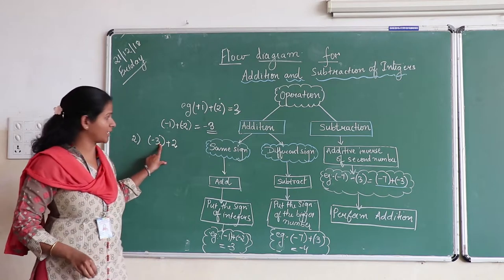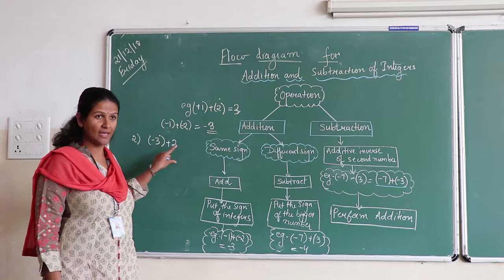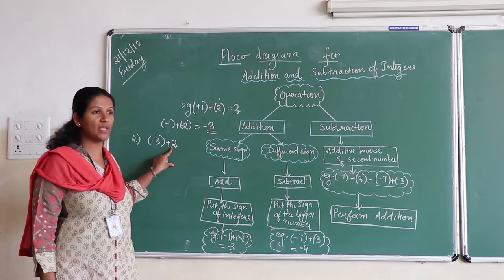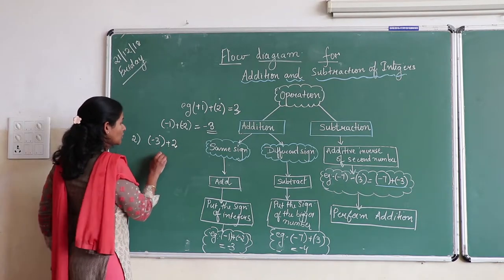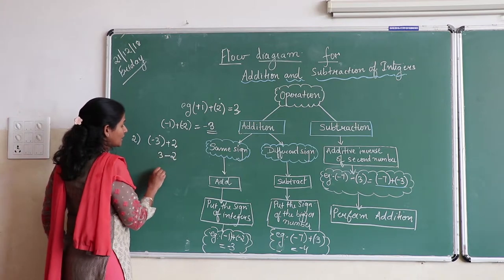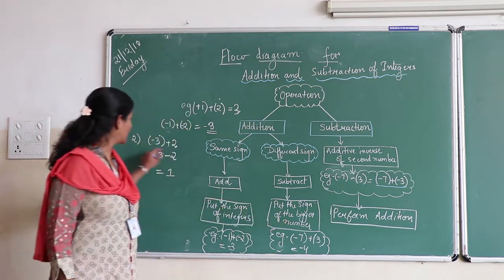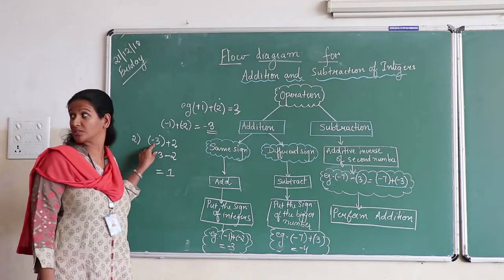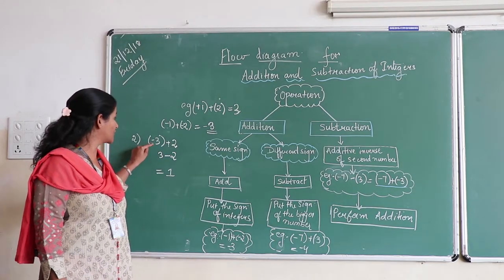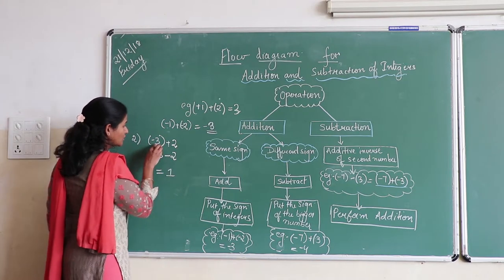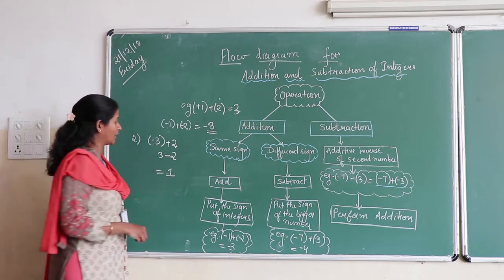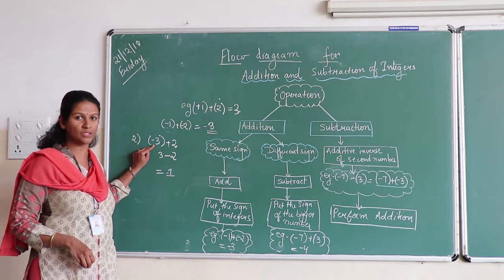We perform subtraction, that is we have to do minus 3 plus 2, that is we have to do 3 minus 2 which is equal to 1 and put the sign of the bigger number. In this case, we are just referring to the absolute value of the integers which is minus 3. So which is 3 and the sign will take of the 3 which is equal to minus 1.